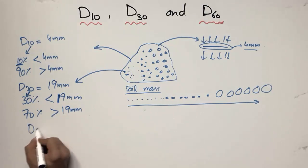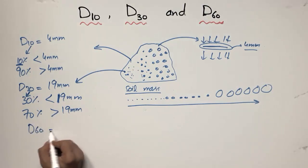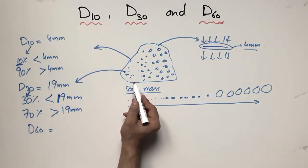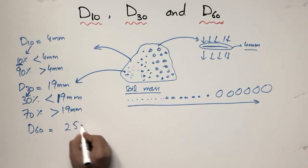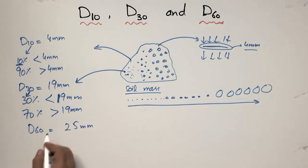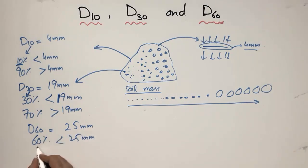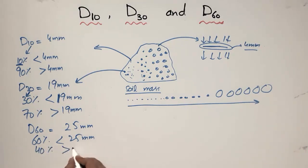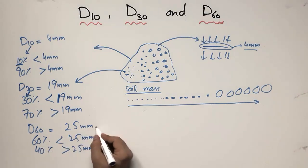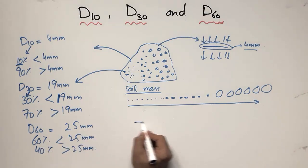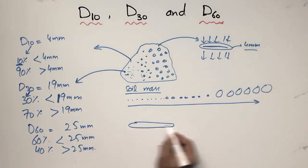Similarly for D60 — let's consider that this soil sample has a D60 of 25 millimeters. D60 means that 60 percent of the particle sizes are smaller than 25 millimeters, while the remaining 40 percent of particle sizes are greater than 25 millimeters.